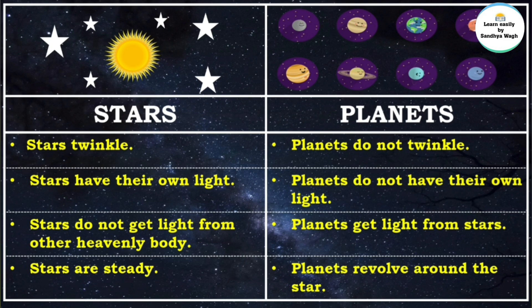Stars are steady. Planets revolve around the star, rotating around themselves as they orbit the sun.